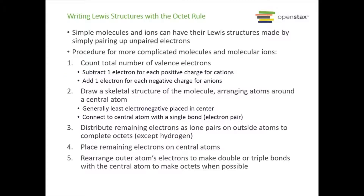There are rules for writing Lewis structures using the octet rule, and we'll go through examples. For a simple molecule or ion, you can often make the Lewis structure just by pairing unpaired electrons. But for bigger molecules and molecular ions, there is a more detailed procedure.